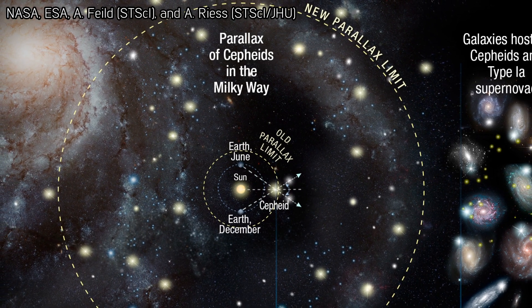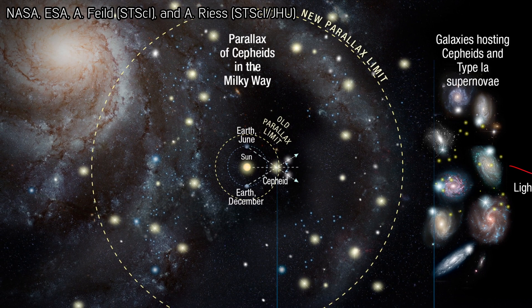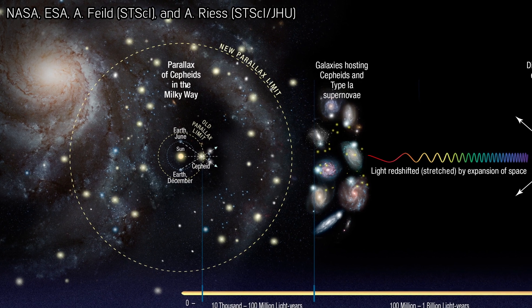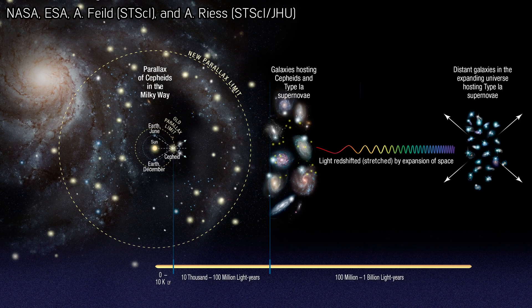The Hubble Tension refers to the idea that you can measure the local expansion rate of the universe, which we call the Hubble constant, after the person who discovered that the universe was expanding. We can also predict what the local expansion rate should be today by measuring data from the very early universe, fitting a cosmological model to that, and extrapolating forward in time to the present day. We have one prediction from the early universe and one local measurement — and if our understanding of the cosmological model is correct, those two measurements should agree. And they don't. We call that the Hubble Tension.